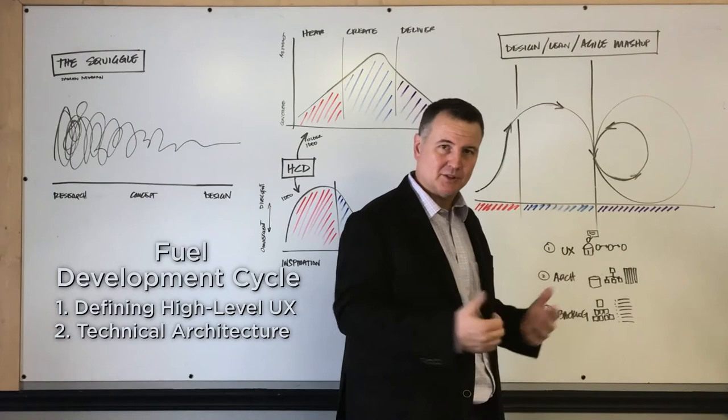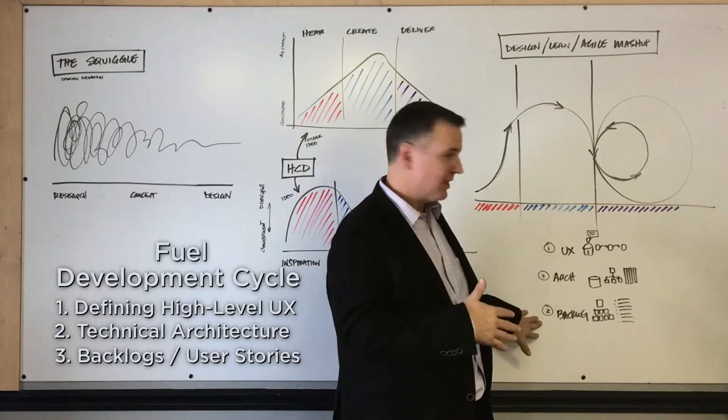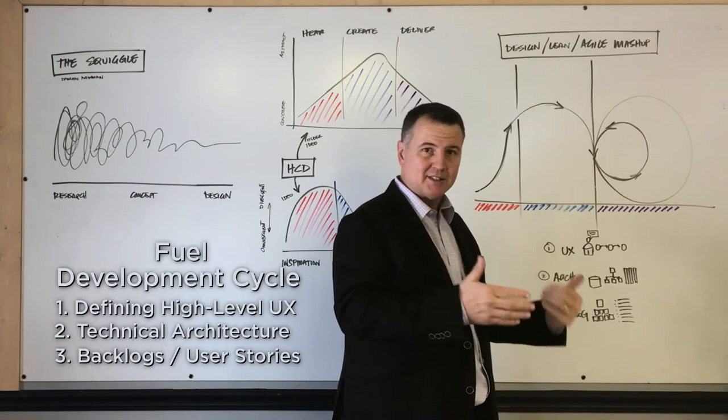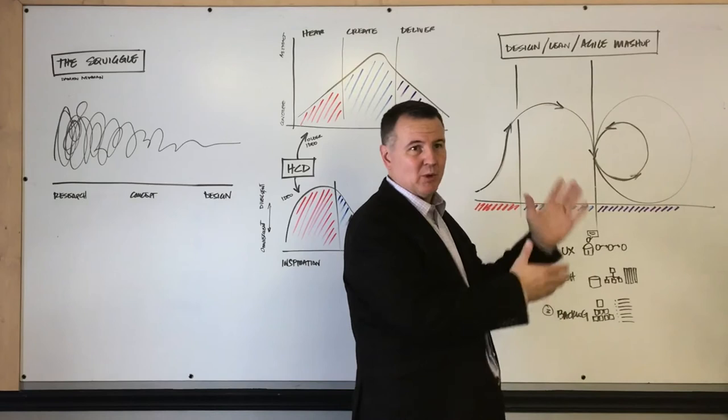And finally, the backlogs, so that can be user stories or epics, and prioritizing those with the product owner so that you understand what the MVP release is and potential releases beyond that at this point. Within the cone of uncertainty, what you think you know now about the first release and work that comes after that.